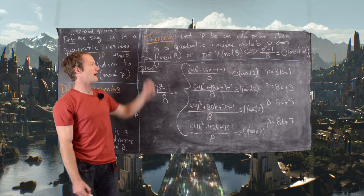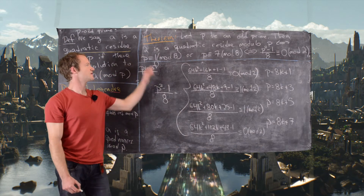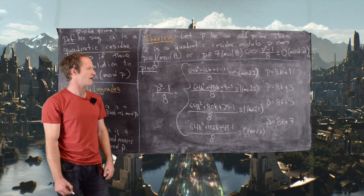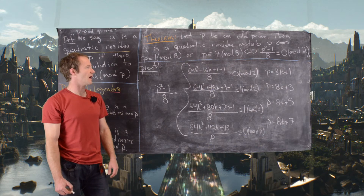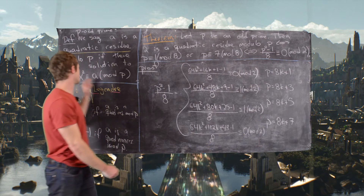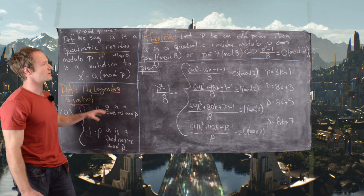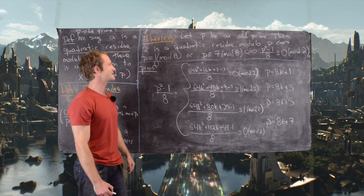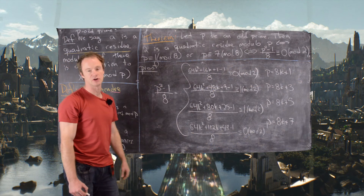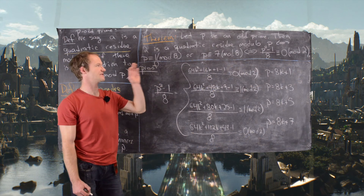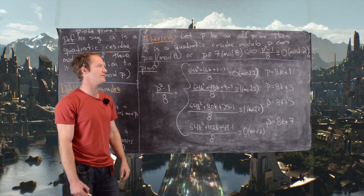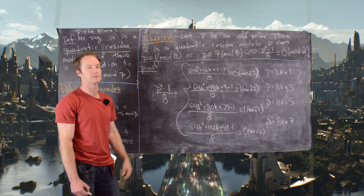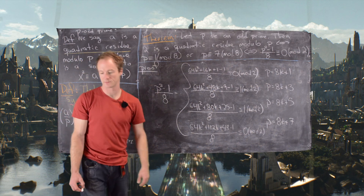This gives us a nice test. The first equivalence is in the spirit of using quadratic residues and the Legendre symbol. The second is a quick computational test: square the prime, subtract 1, divide by 8, and check if the result is even — that tells you whether 2 is a quadratic residue. That's the end of the video.